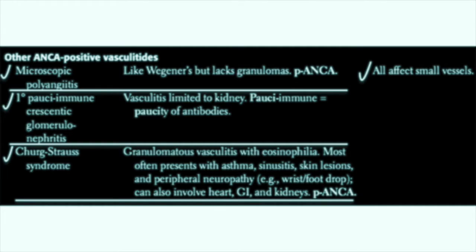Churg-Strauss syndrome is a granulomatous vasculitis classified as an eosinophilic vasculitis. These patients will also have asthma and sinusitis, as well as skin lesions and a peripheral neuropathy, for example, wrist or foot drop. Churg-Strauss may also involve the heart, the GI system, and the kidneys. It is also P-ANCA-positive.